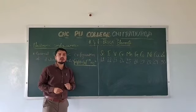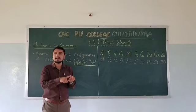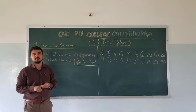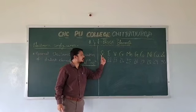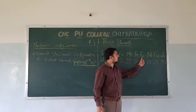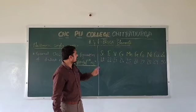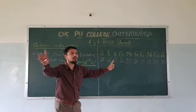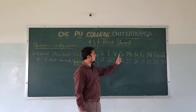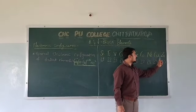Let us write the electronic configuration for the 3D series, which belongs to the 4th period. The elements are: scandium (21), titanium (22), vanadium (23), chromium (24), manganese (25), iron (26), cobalt (27), nickel (28), copper (29), and zinc (30). You have to remember these elements along with their atomic numbers.